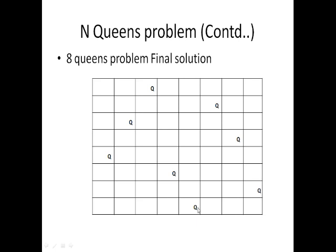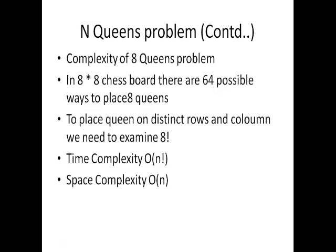This is the final solution for the 8-Queens problem, and this is its complexity. In the 8-Queens problem, there are 8×8 = 64 possible ways for placing 8 queens. To place queens in distinct rows and columns, we need 8! values. The time complexity is O(N!), where N can be 4 or 8. The space complexity is based on the chessboard size: 4×4 or 8×8, so space complexity is O(N²).